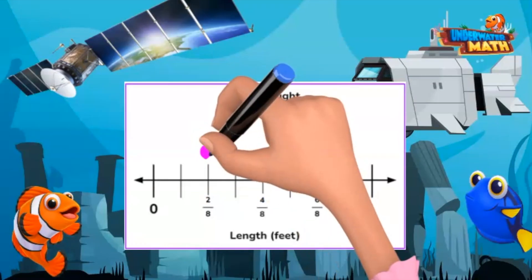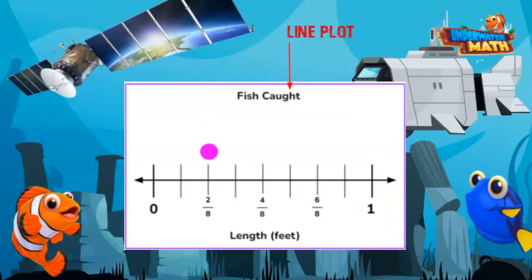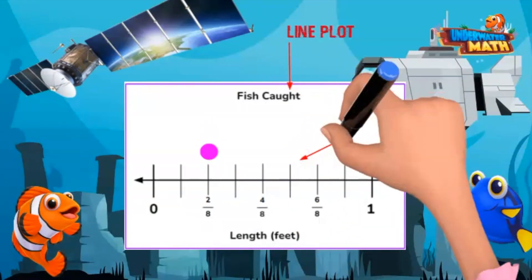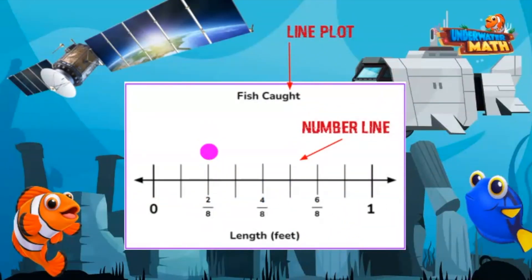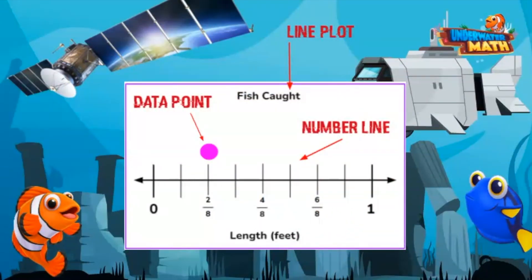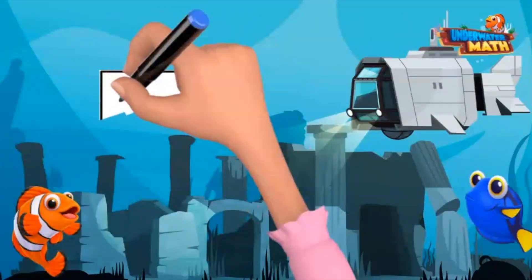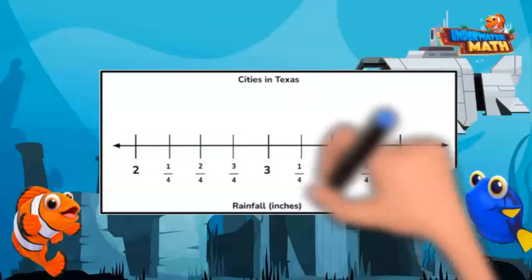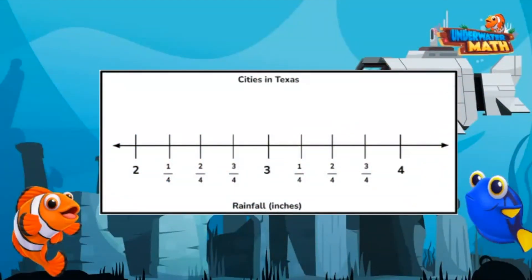Line plots are graphs that display data as dots or marks above a number line. The dots above the number line are called data points. Let's start exploring the weather station. Look at this number line — it shows the amount of rainfall 10 cities in Texas received in inches last month. The number of cities is the frequency, and each dot or data point represents one of the 10 cities.